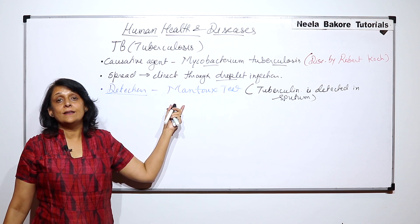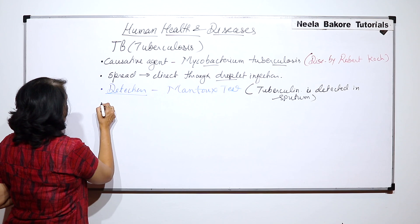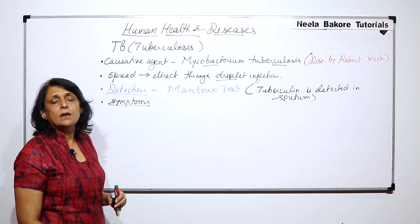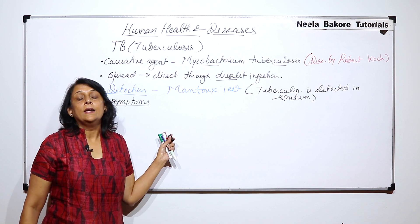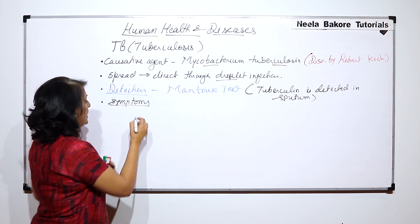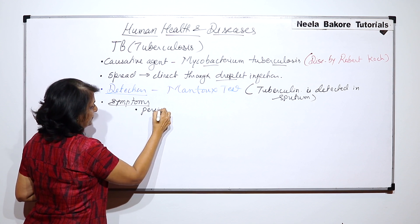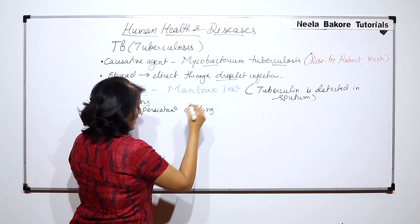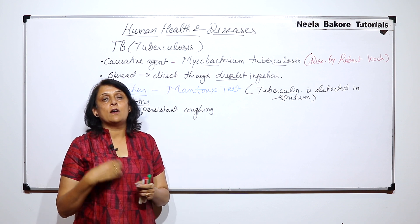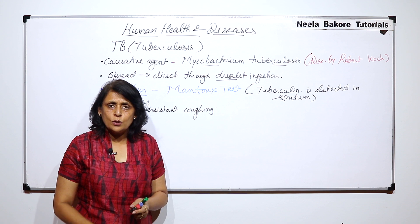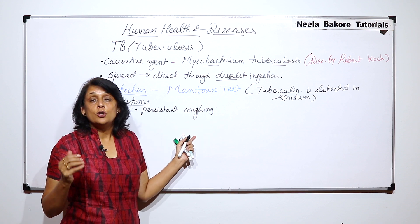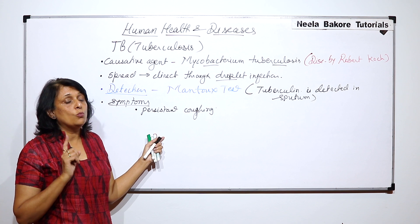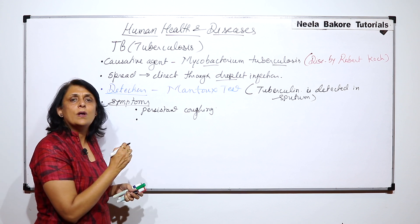The symptoms of TB are very common and that is why they often get ignored. One symptom is persistent coughing. Normally we have a cough for 2–3 days, a week at most. In TB it persists for months. So if a person is persistently coughing, that can be one symptom. Then there is low-grade fever.